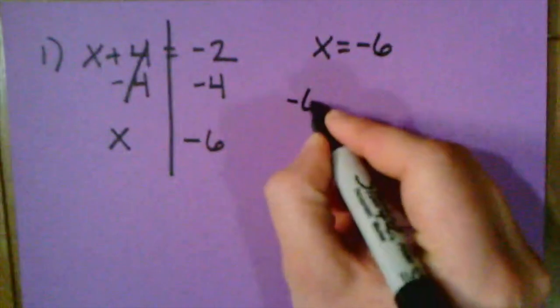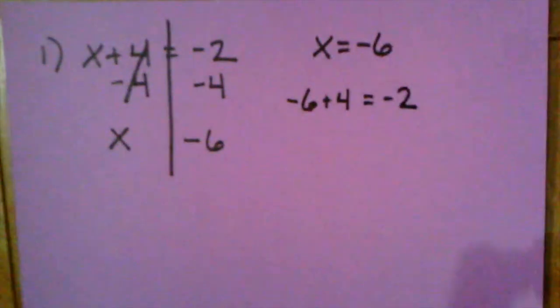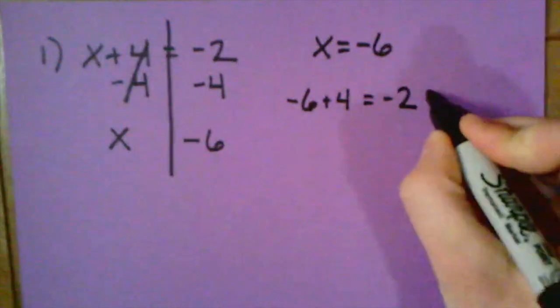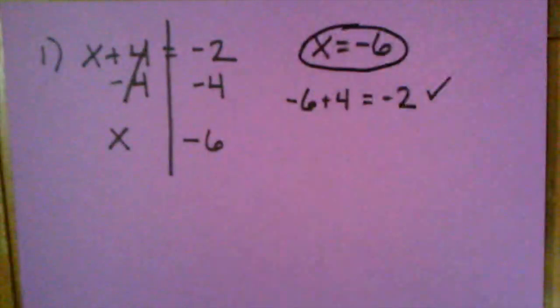So I would have negative six plus four equals negative two. And when I do this, I can run through this here and I see that that is a true answer. So I know that X does equal negative six.